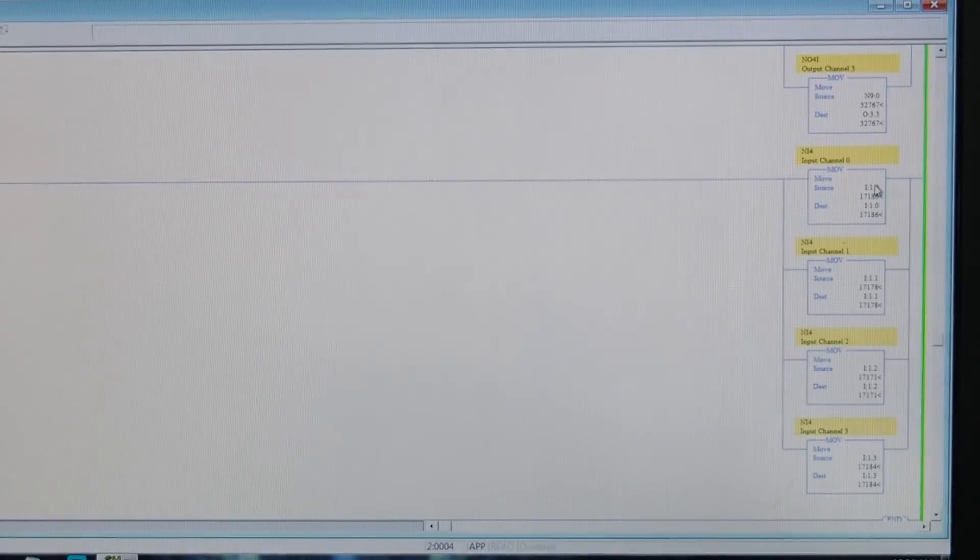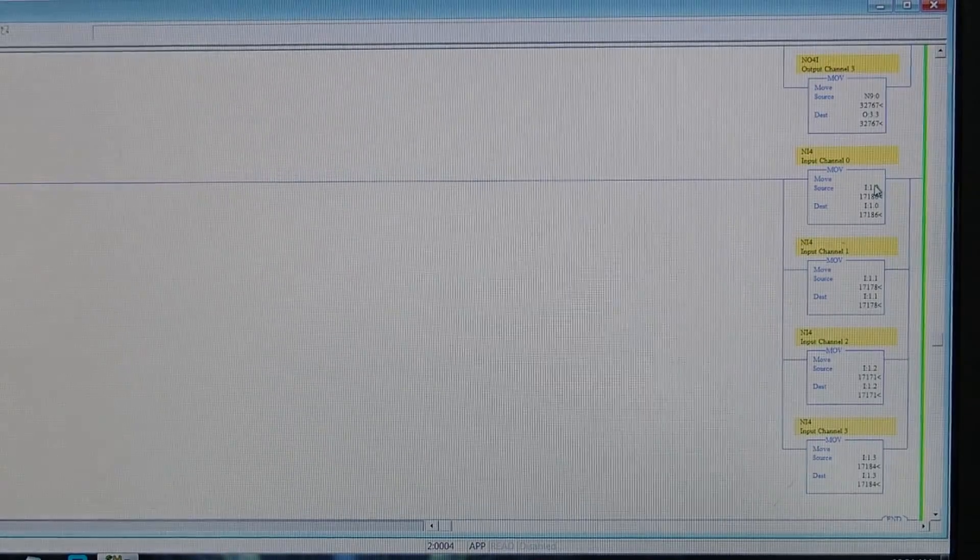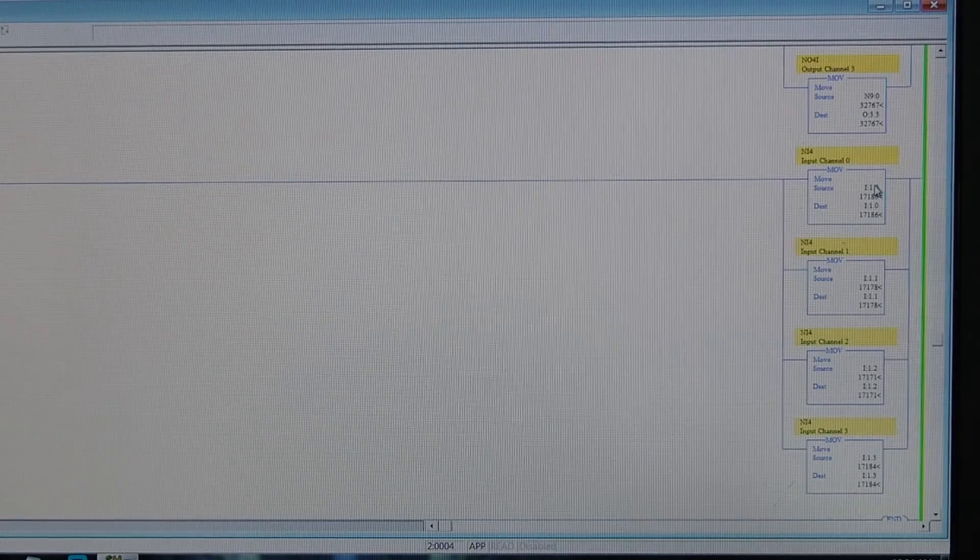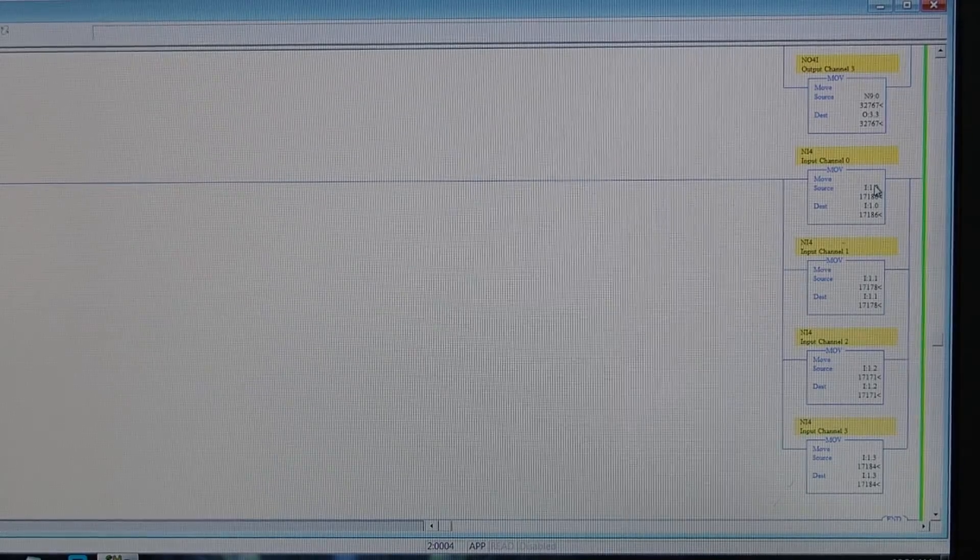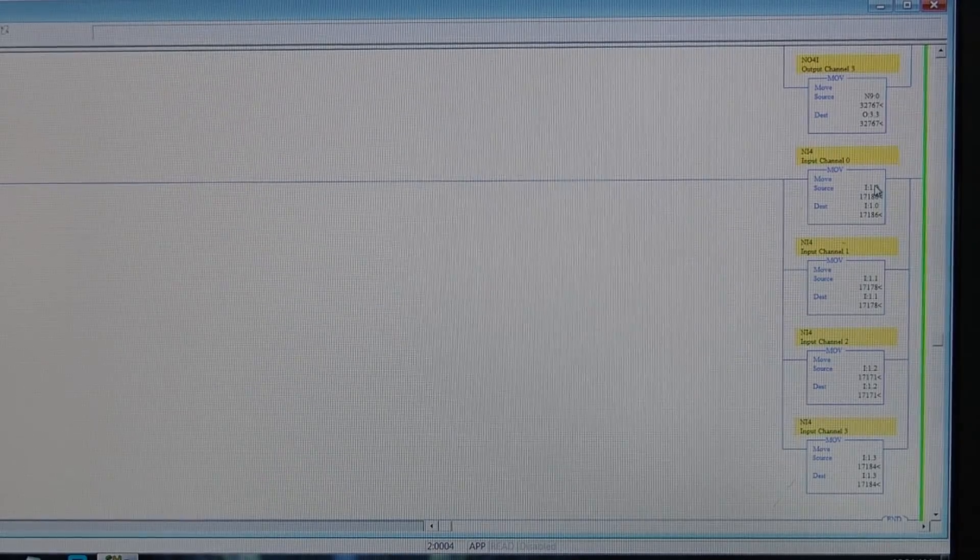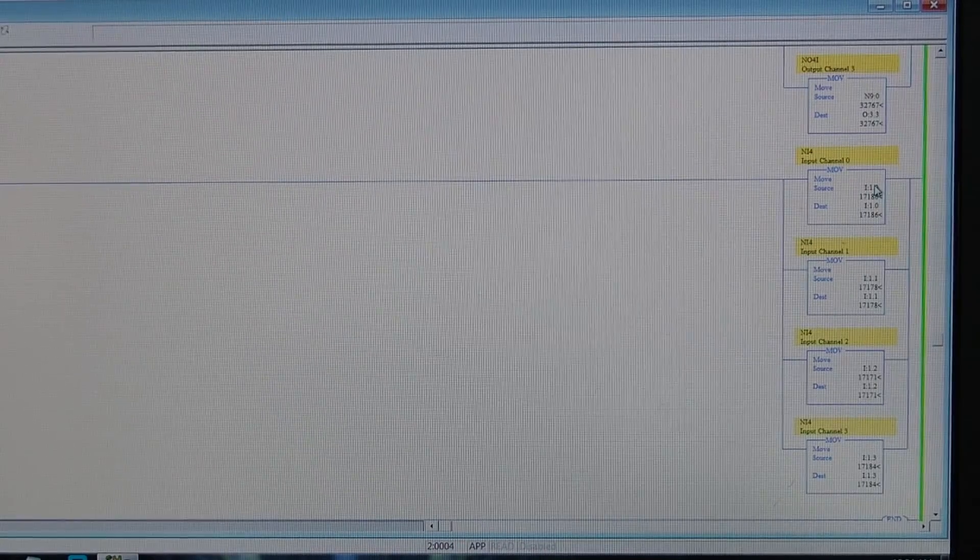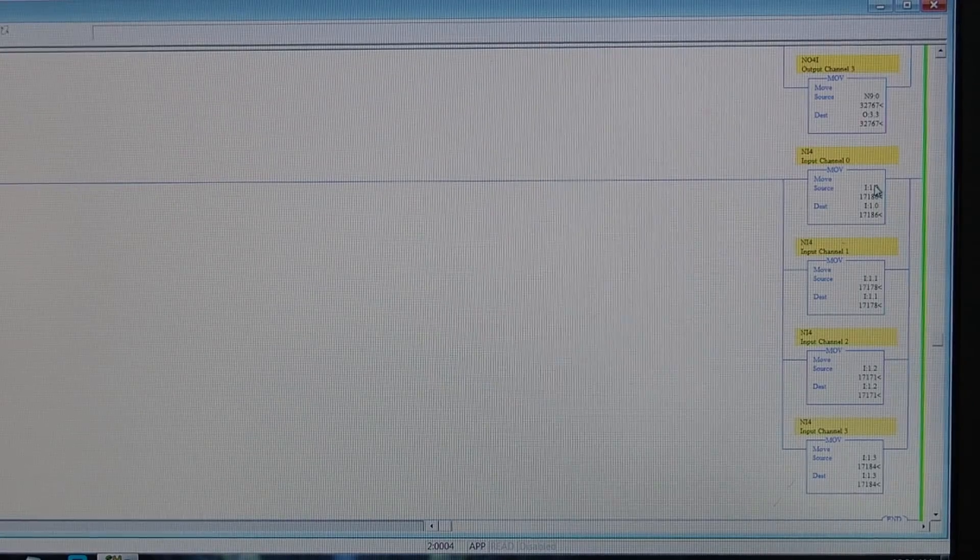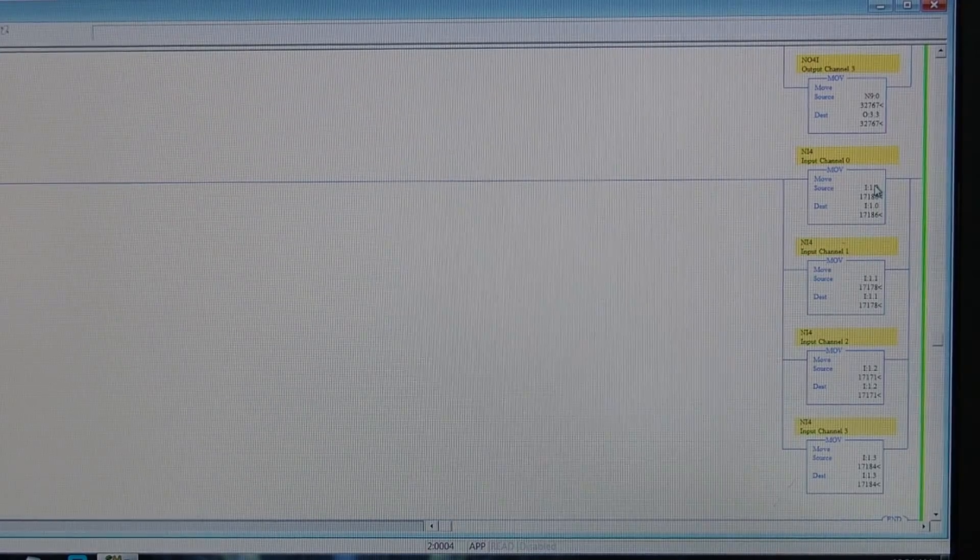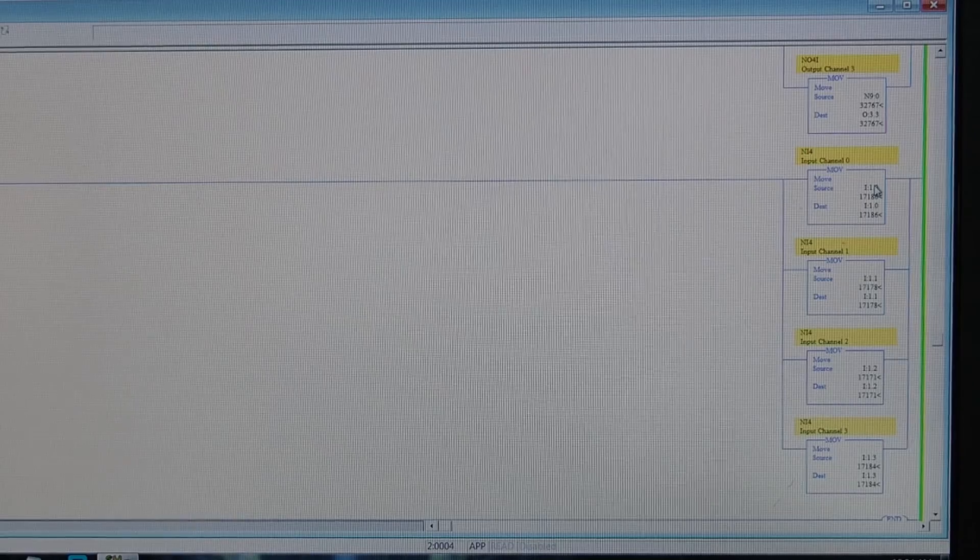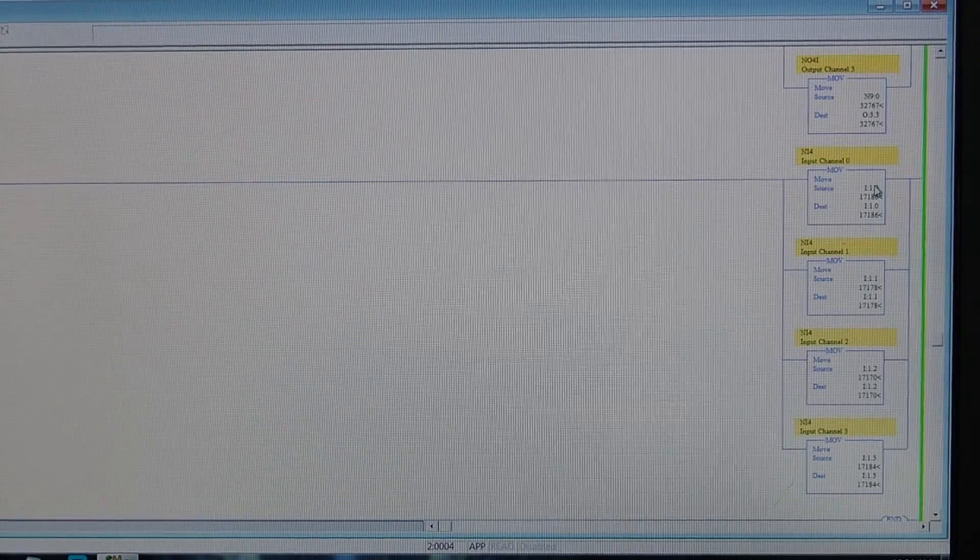So that shows, doing it this way shows the accuracy of both modules. It shows that all channels work. It shows that you're getting an actual output that you can work with to operate your analog device, whether it be an input or an output, and be able to make use of the programming. So there we go.